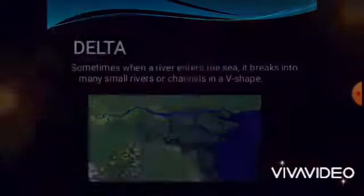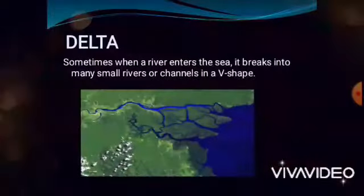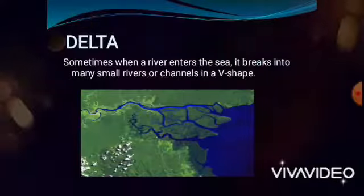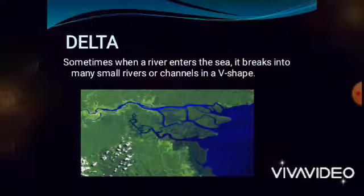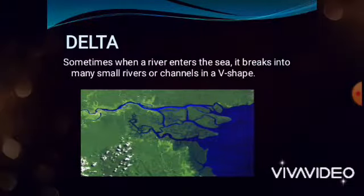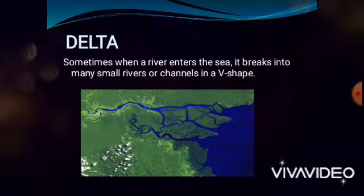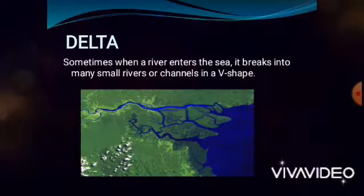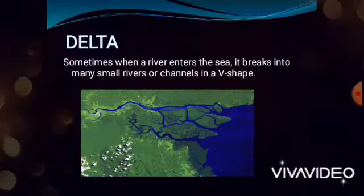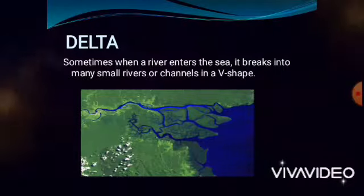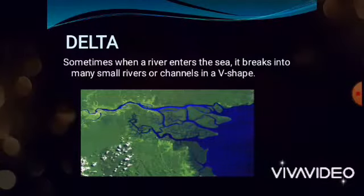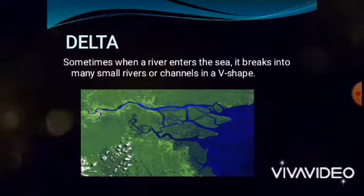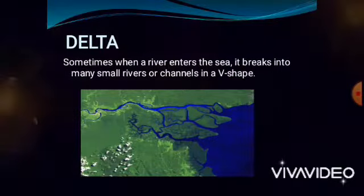And the last one is delta. Sometimes when a river enters the sea it breaks into many small rivers or channels in a river-V shape. The land here can be very fertile because of the mud brought down by the river, but it is also responsible for flooding.